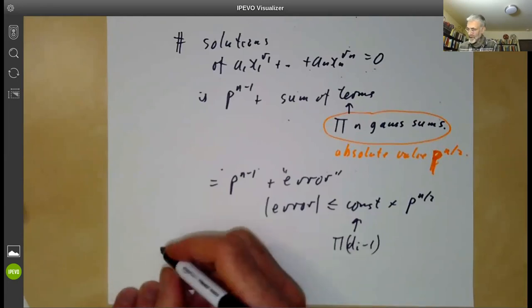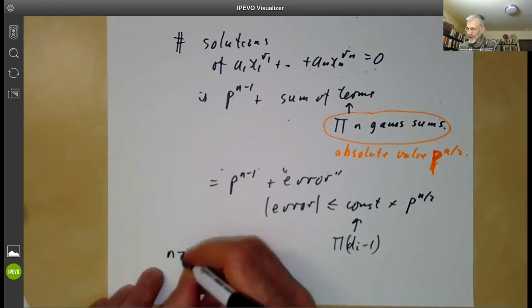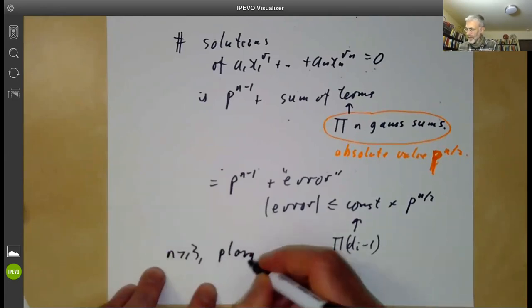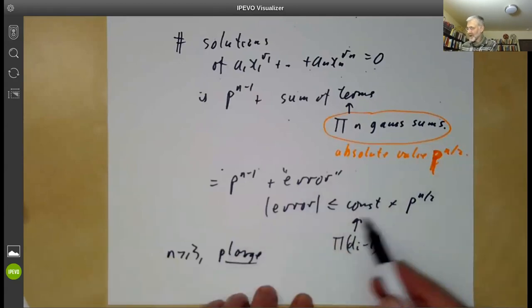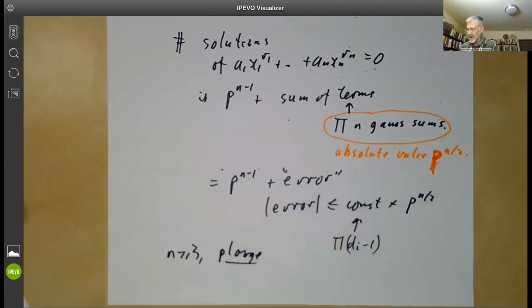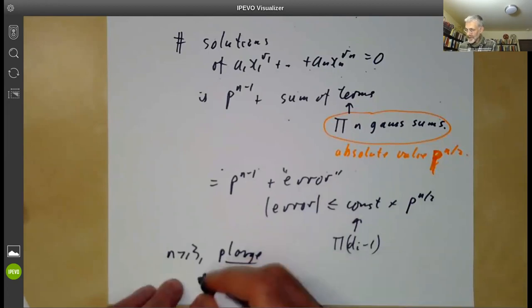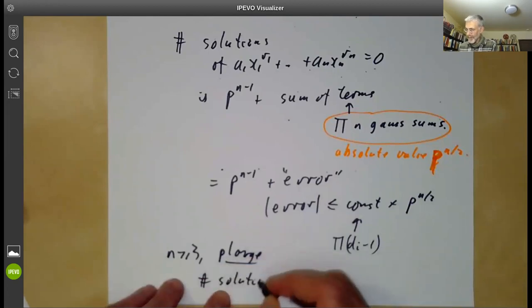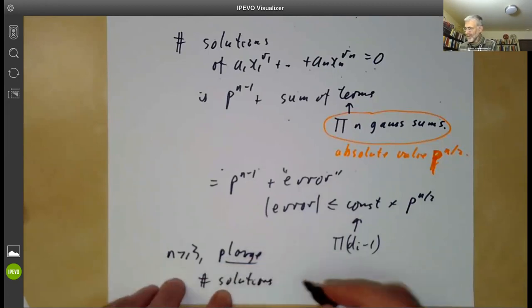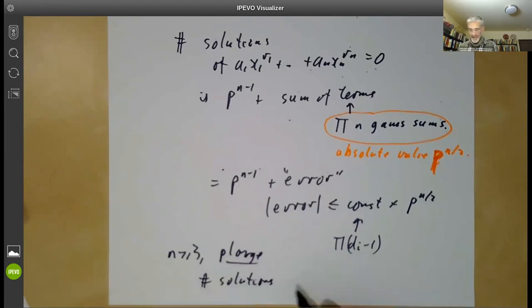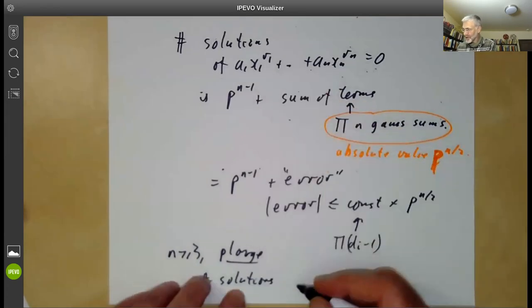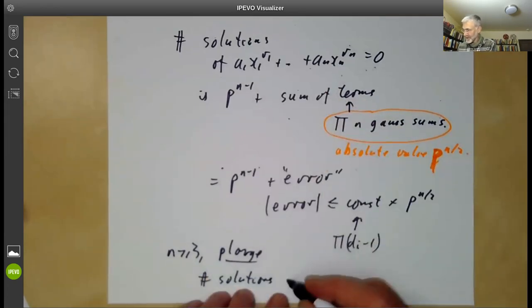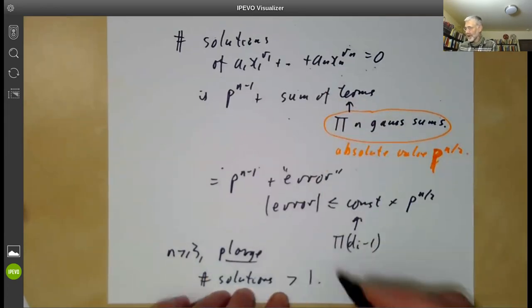In particular, suppose n ≥ 3 and p is large — meaning significantly bigger than this constant. Then the number of solutions is at least 1, so there are non-trivial solutions beyond the obvious one where all the x_i are zero.